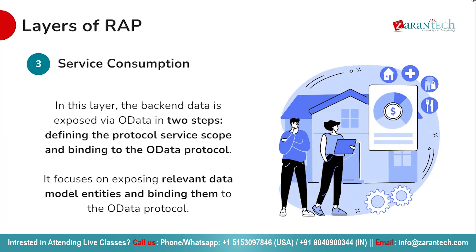The Service Consumption layer operates in two steps to expose backend data via OData. The first step involves defining the protocol service scope, which outlines the data entities that need to be exposed. The second step is binding the data entities to the OData protocol, enabling them to be accessed and consumed by other systems. The primary aim is to expose the relevant data model entities and make them available via OData protocol for seamless data exchange.